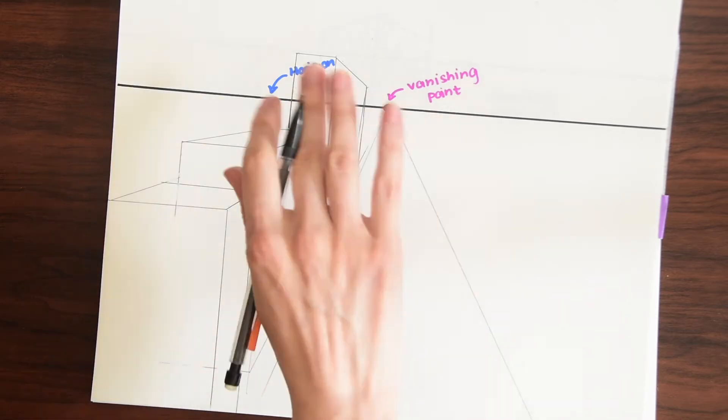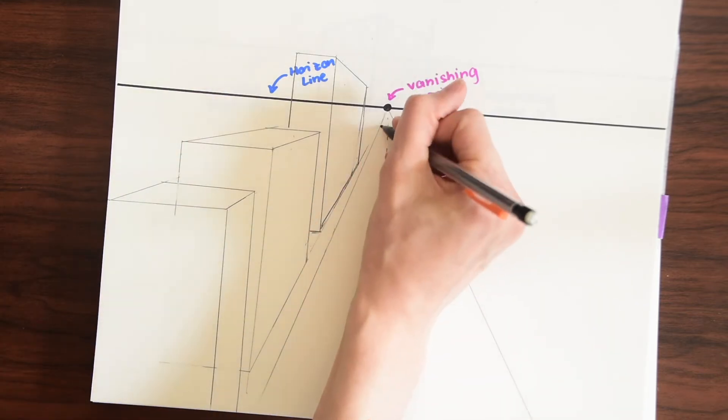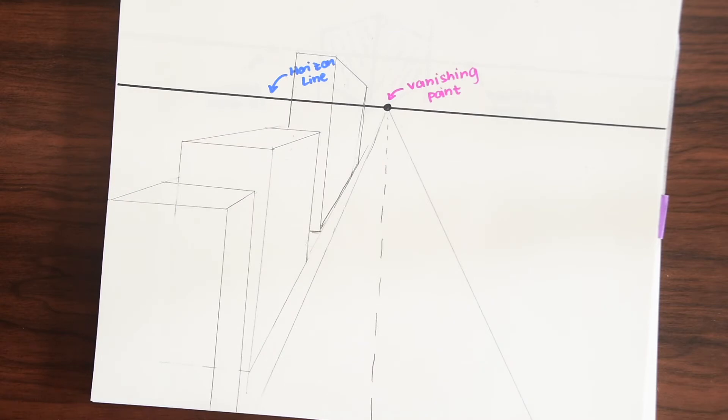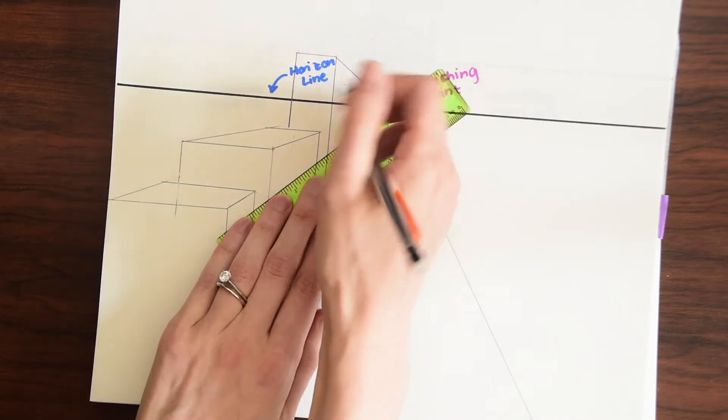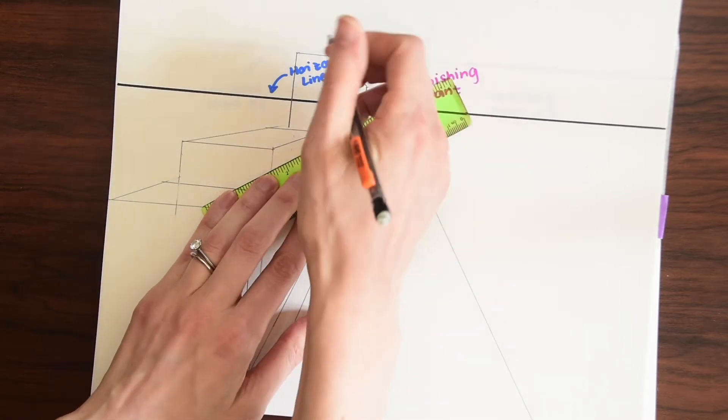And you can have fun playing around with the vanishing point and placing it in different spots drawing different kinds of roads. You can also draw some cute windows that follow along with the vanishing point as well. So if you want to draw a window maybe we'd do something like this.